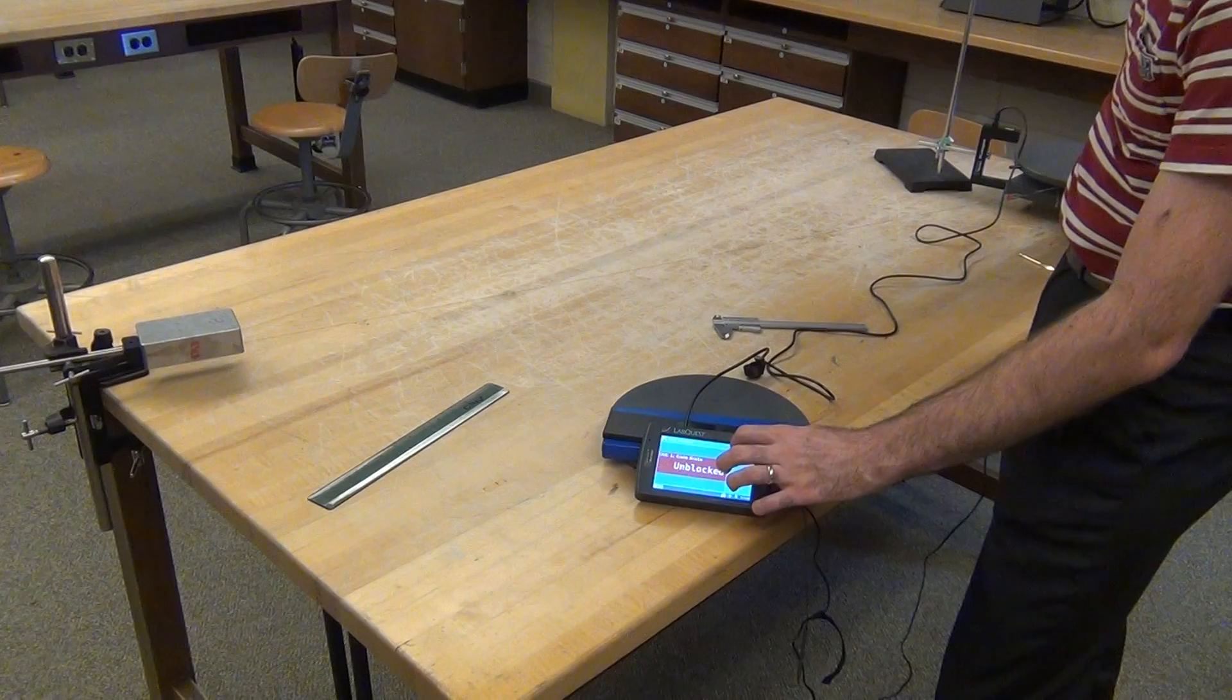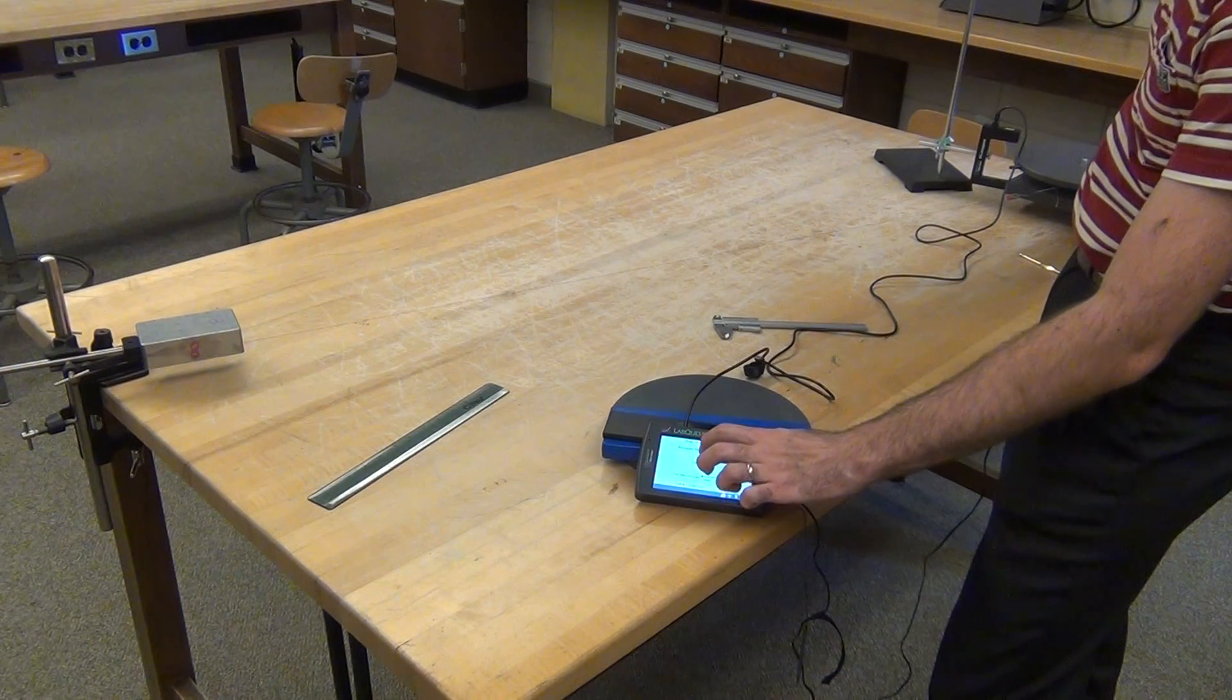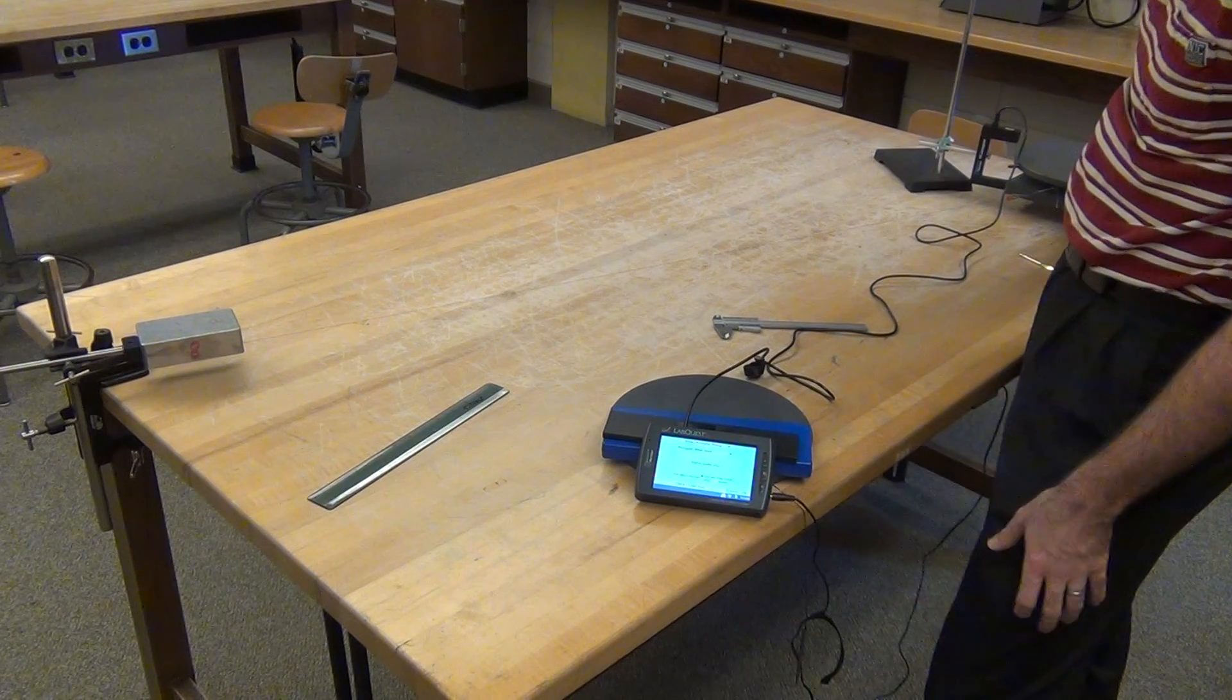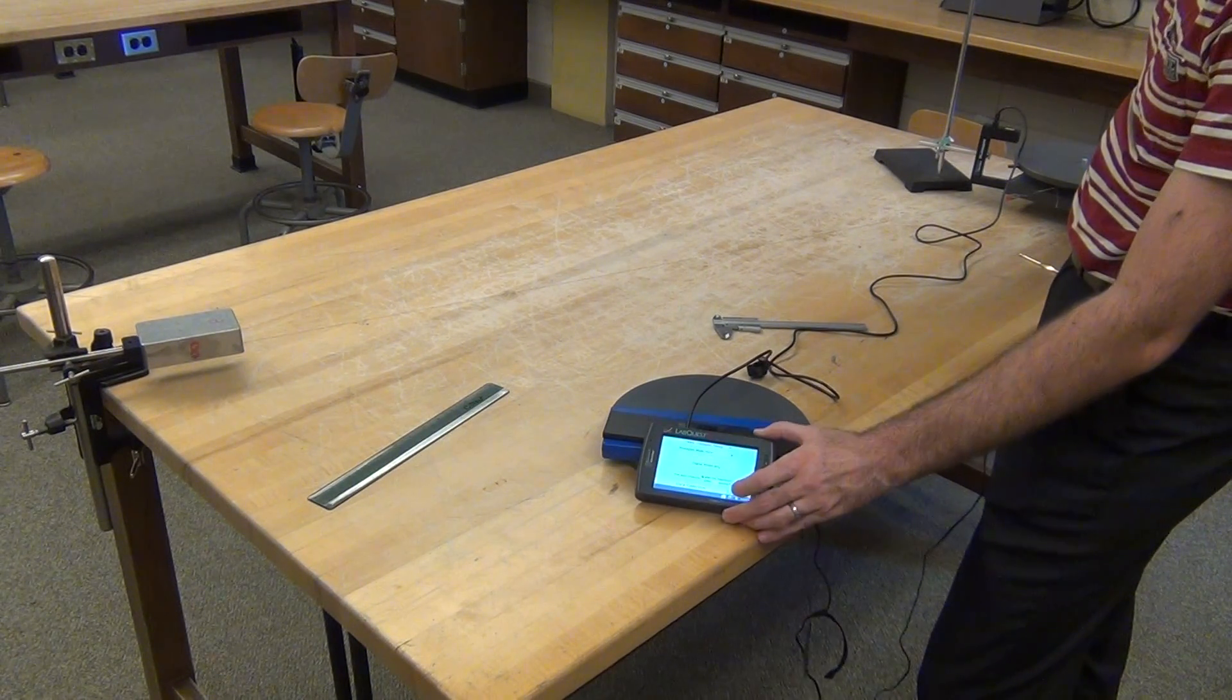Make sure that you're set to photogate timing, mode none, and end data with the stop collection, because you'll need different amounts of data for different runs.